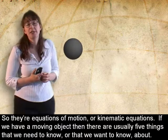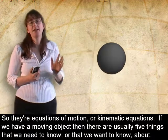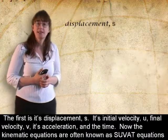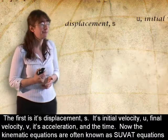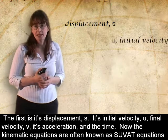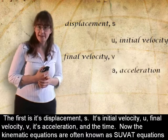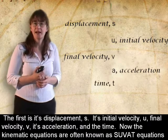If we have a moving object, then there are usually five things that we need to know, or that we want to know about: the first is its displacement, s, its initial velocity, u, final velocity, v, its acceleration, and the time.